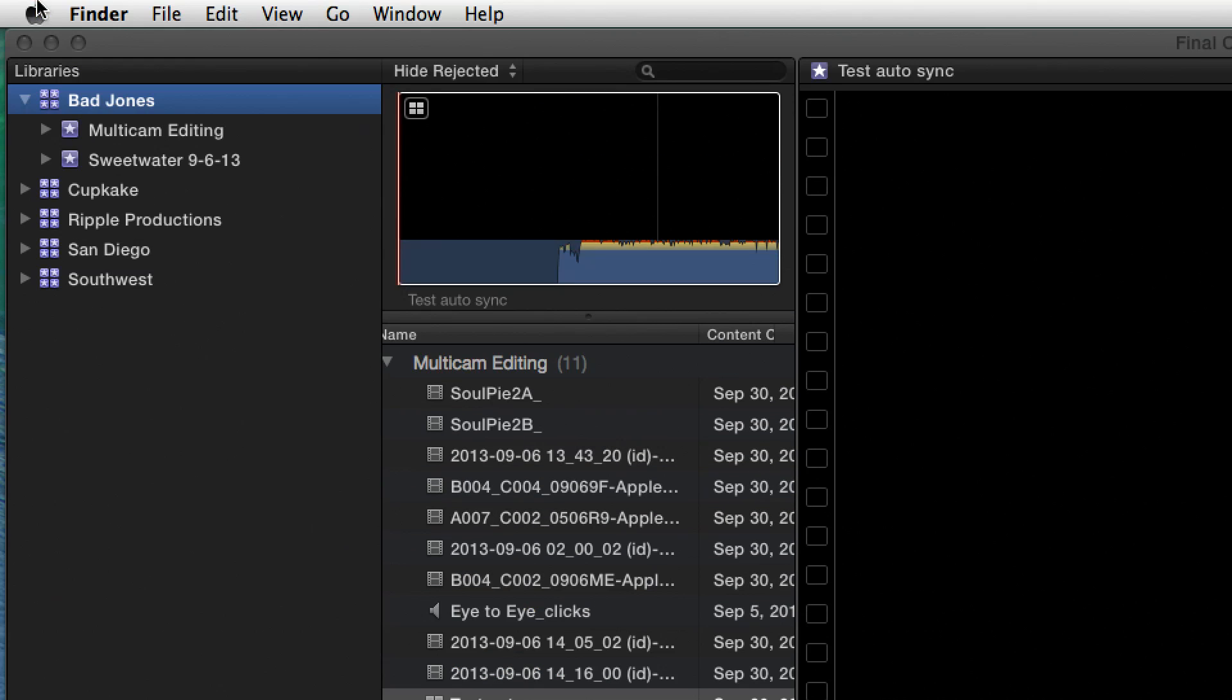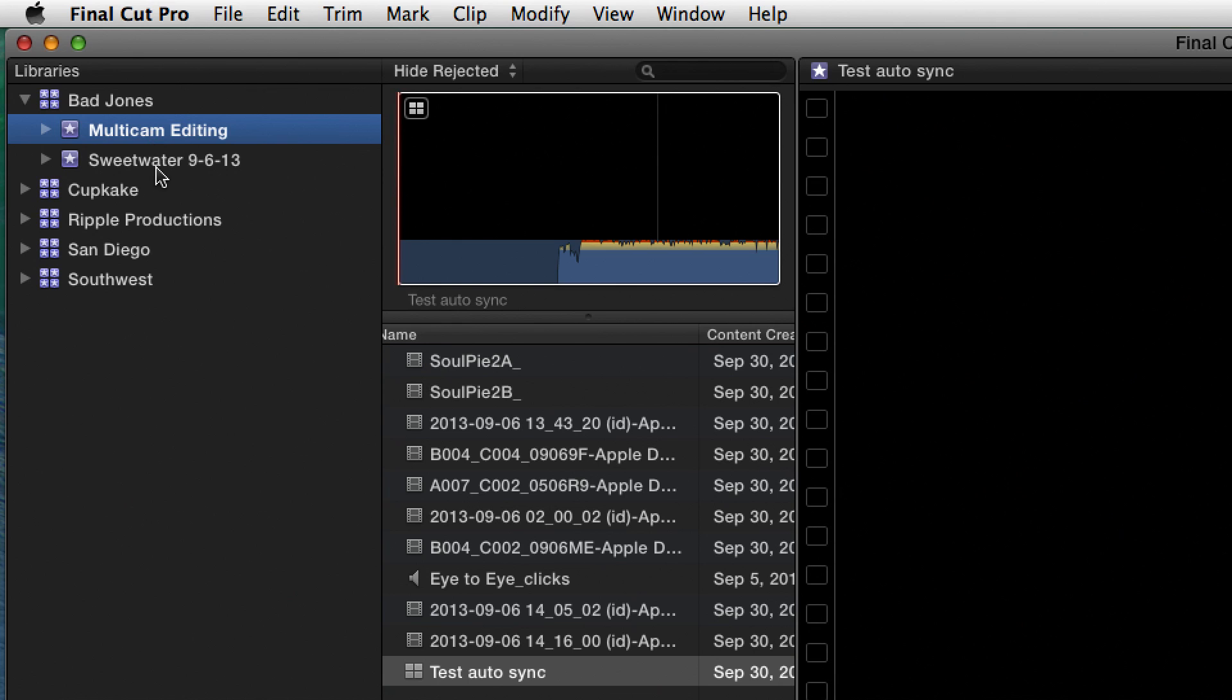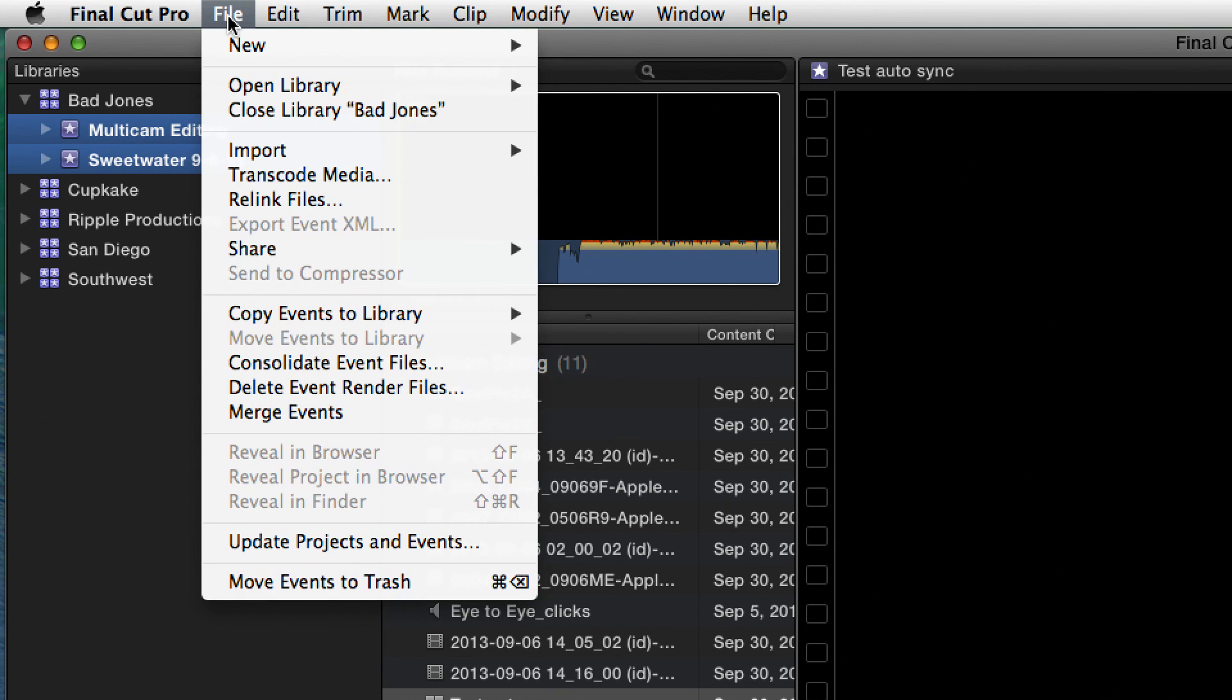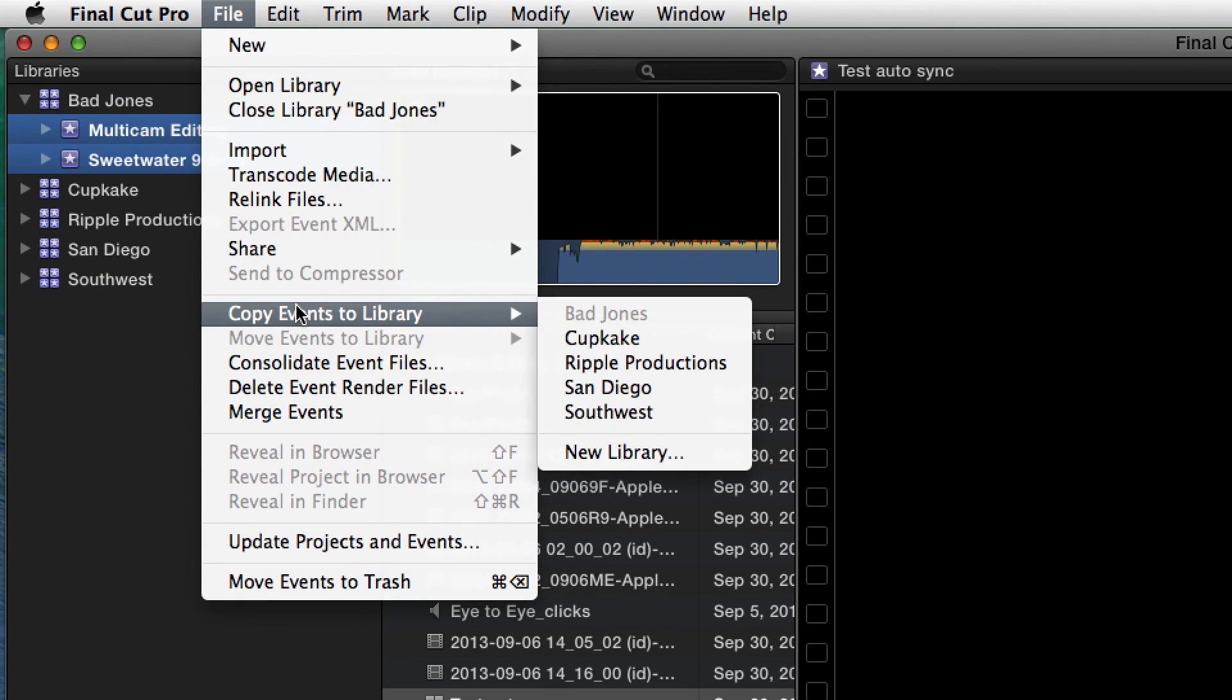So what you would do is within Final Cut Pro X, you would select all the events in the library that you want to archive. In this case, I want to archive the entire library. So I select those events. I go to the File menu, and what I do is I say to copy the events to a library. I'm going to say a new library.